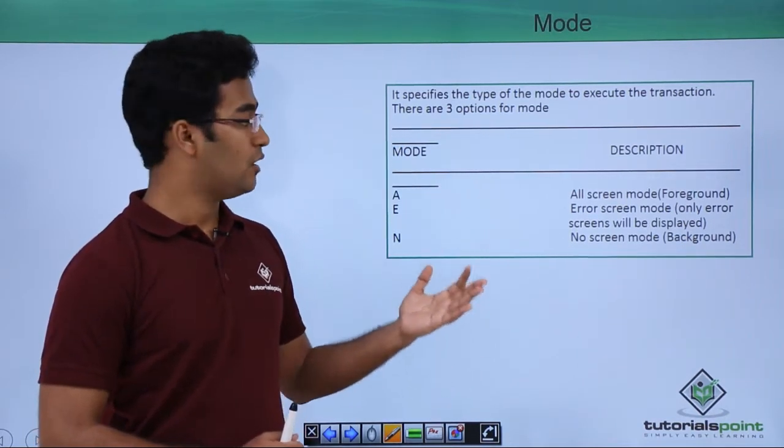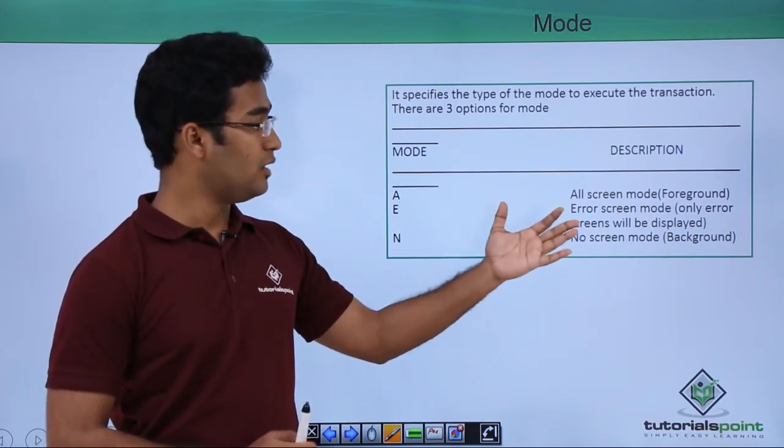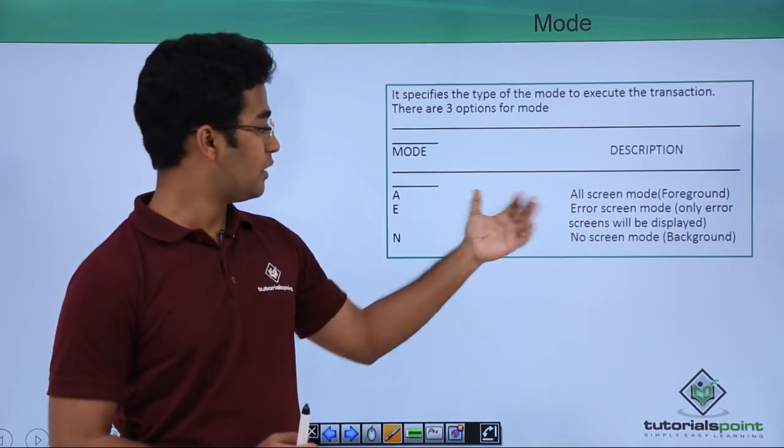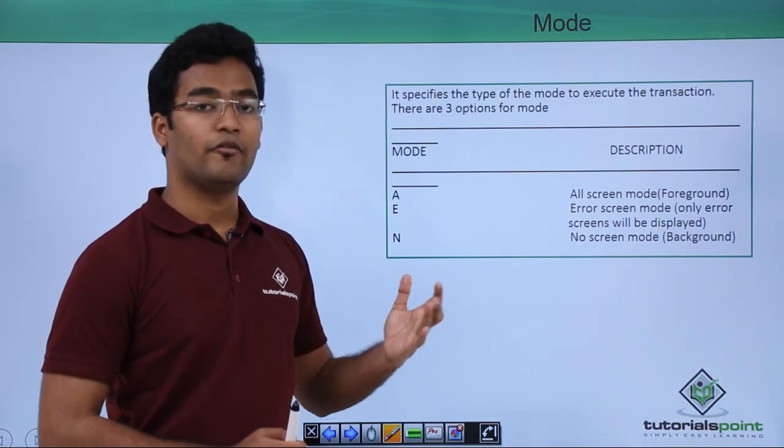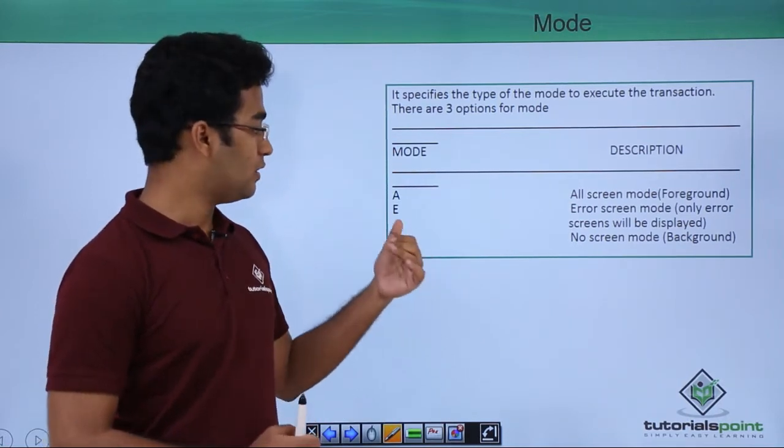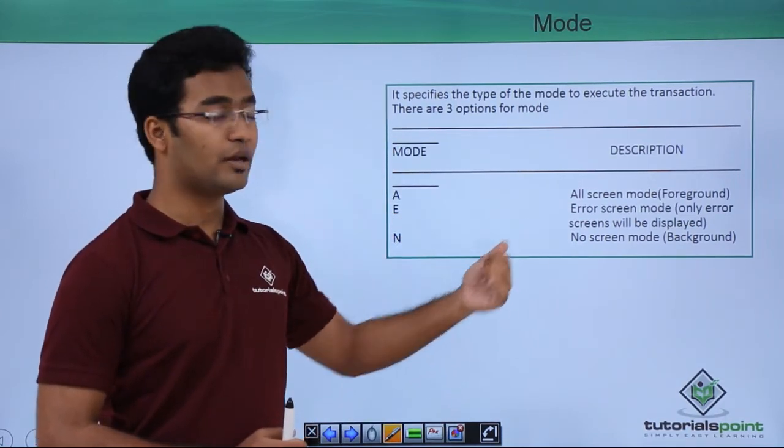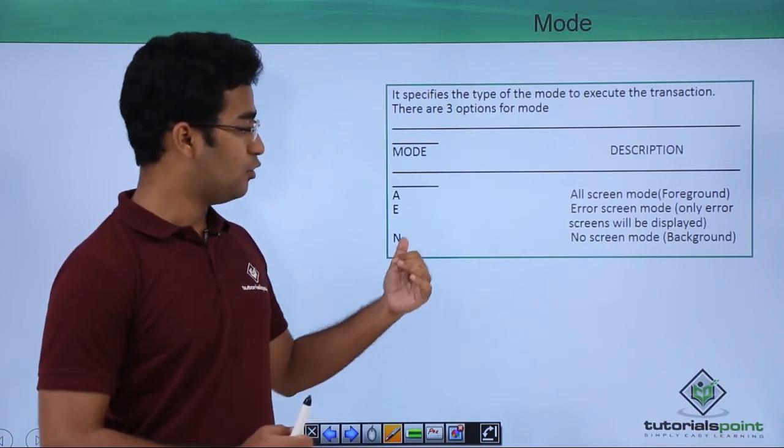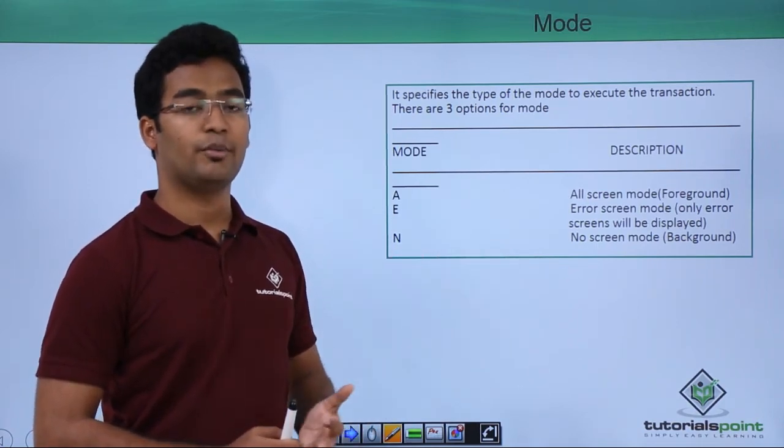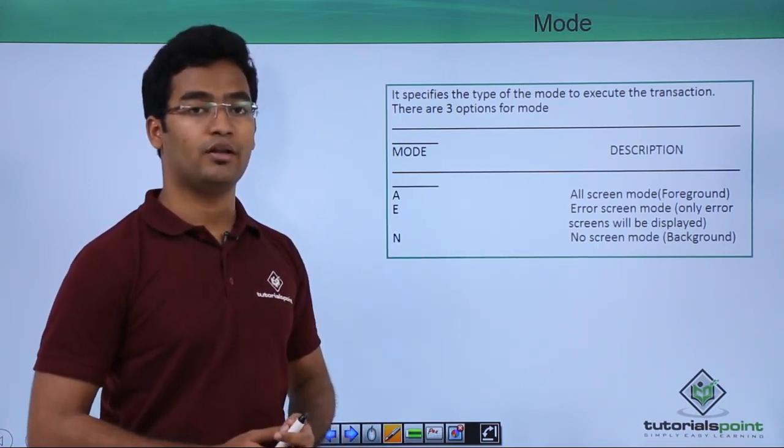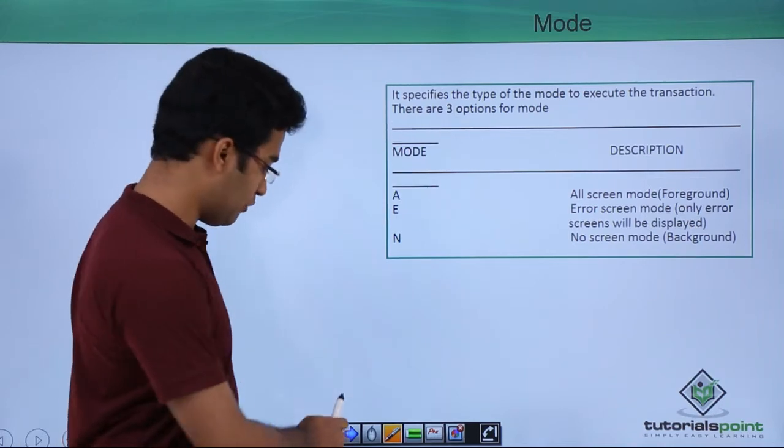When we are recording, all the screens would be displayed in case of A. In case if there is an error screen, only the error screen will be displayed. And in case of no screen mode, no screen would be displayed - all the processing would be done in the background.